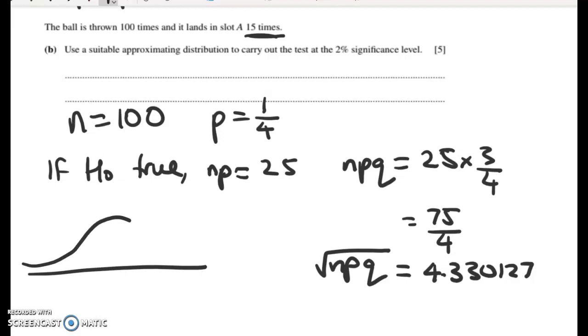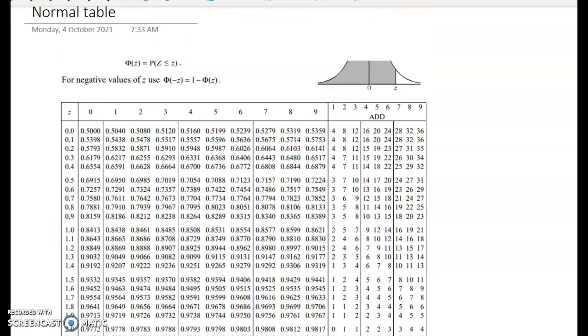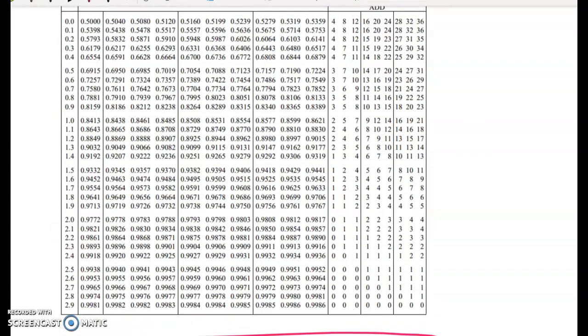So let's see, if we're using the normal approximation, and we're doing a 2% significance level, that means that my critical region is going to give me 1% in each tail. So going to my normal tables up here, just get rid of the scribbles from last week, we're looking for the Z value that's going to cut off 1% in each tail. So we're looking through here for 0.99, and you can see it comes in somewhere in here, right?